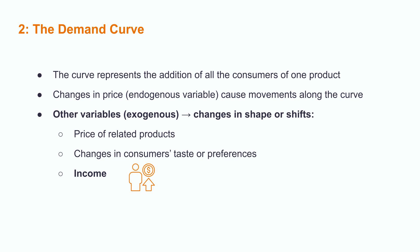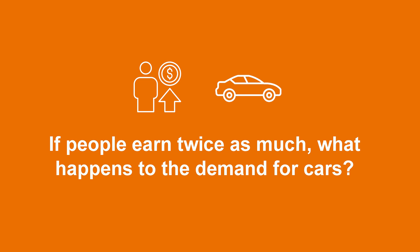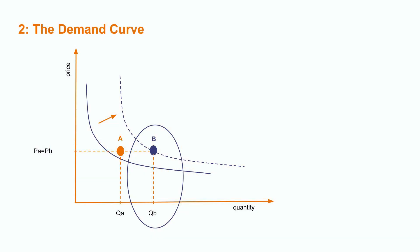Income is also a relevant variable. What would happen if everyone started earning twice as much as today? For example, if people start earning twice as much and we are analyzing the demand for cars, the demand curve would shift to the right. For price X, the quantity demanded would increase from QA to QB. QB is higher, so the change in income causes an exogenous increase in the quantity demanded.